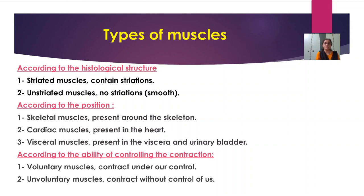Now friends, there are different types of muscles. First, we will see how types are classified according to histological structure. According to histological structure, muscles are of two types: striated muscles, which contain striations and bands, and unstriated muscles, which show absence of striations and hence are called smooth muscles.